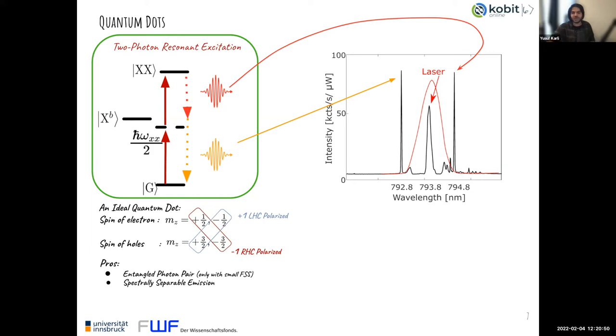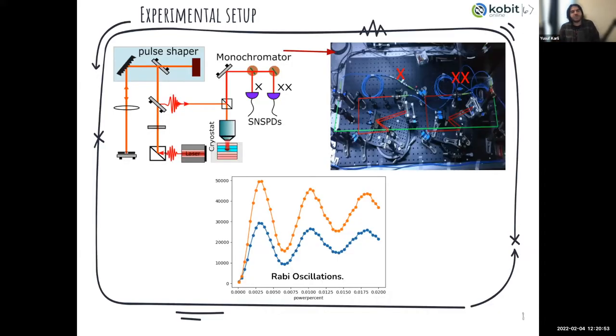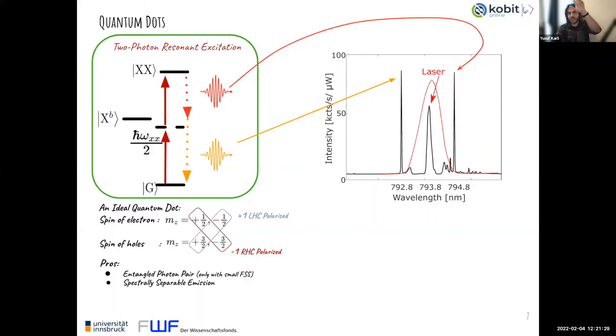A very simple drawing of the experimental setup looks like this: we prepare laser pulses, send them to the cryostat from the top, excite the quantum dot, then collect the quantum dot emission and scattered light together and go to our homemade monochromator and send exciton and biexciton emissions to the SNSPDs with narrow-band notch filters. The figure on the bottom shows the Rabi oscillations for the exciton and biexciton. There is a difference in the photon count, but it's just about the coupling efficiency differences between exciton and biexciton channels. In the spectrum, you can see they have the same counts.